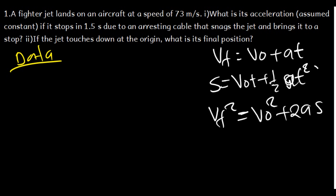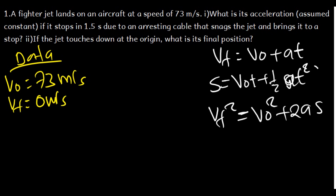That means it was decelerating. So the initial velocity is 73 meters per second, the final velocity is zero meters per second, and the time is 1.5 seconds. Now the question asks us to find the acceleration. Among these formulas, which one is suitable for finding the acceleration?